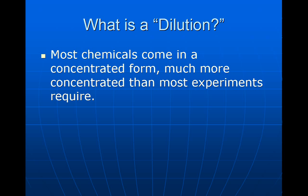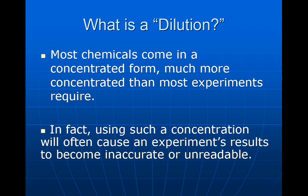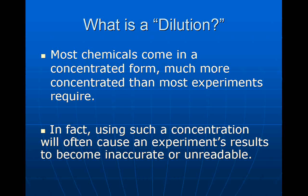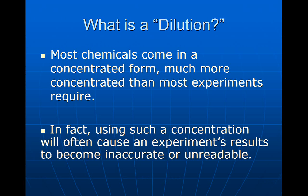Most chemicals come in a concentrated form, and they're way more concentrated than any kind of experiment we require. And this is good for us from a financial standpoint because what we can do with this dilution is end up using a lot less chemical than we actually need. In fact, using such a concentration of this high concentration that they're sending us will often cause an experiment's results to become inaccurate or unreadable. And for the sake of being accurate in the lab and getting good results to help either teach ourselves or reinforce an idea that we've been studying, this isn't a good thing.